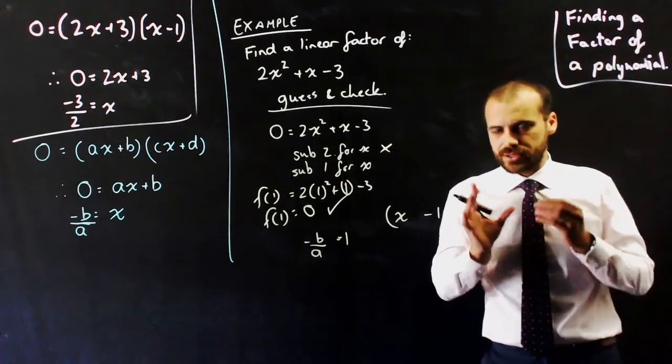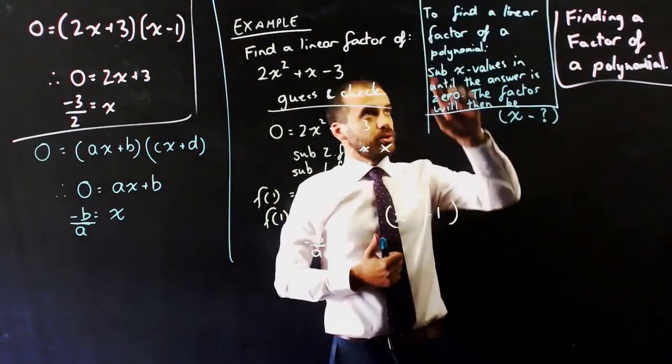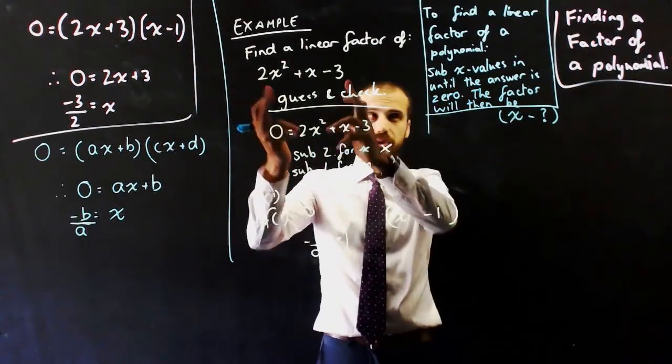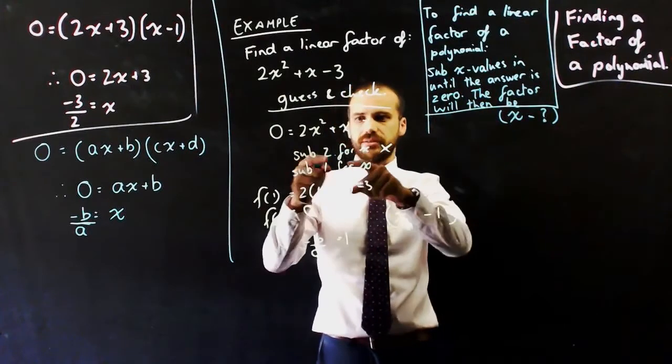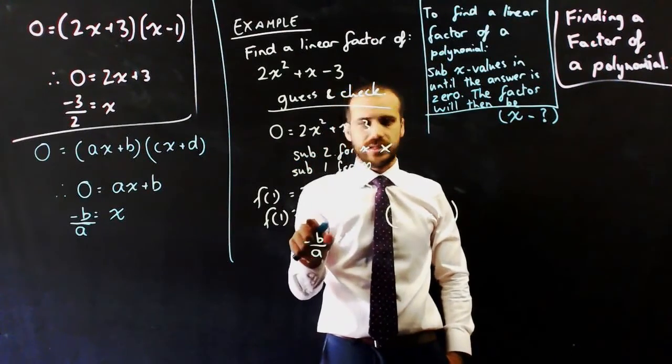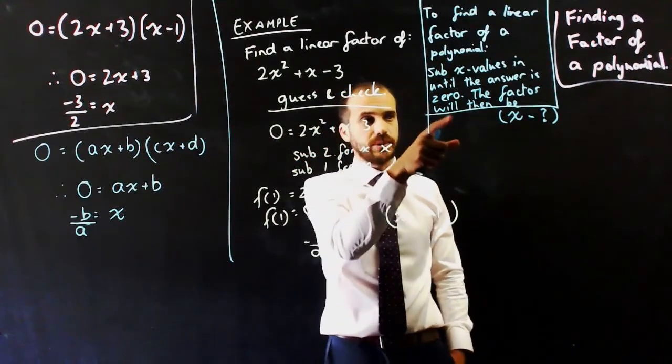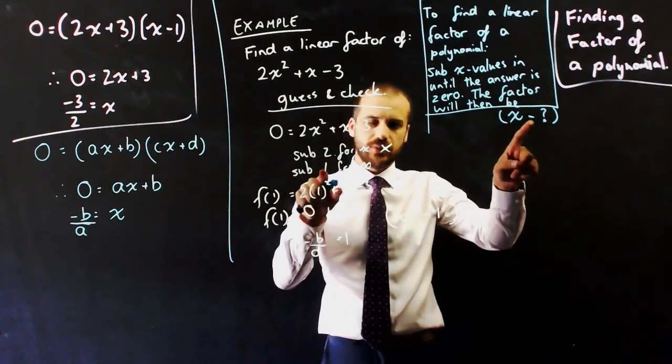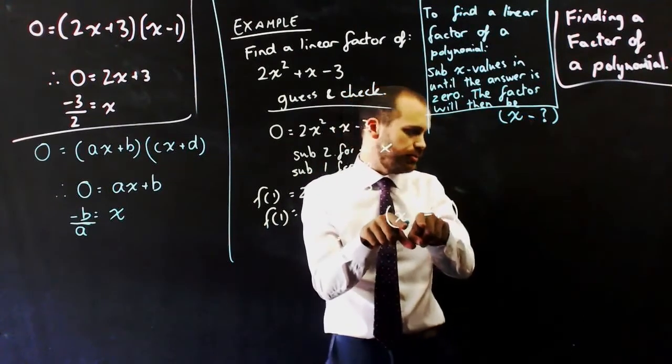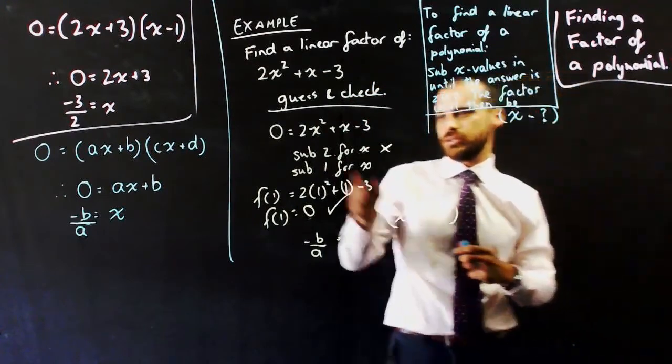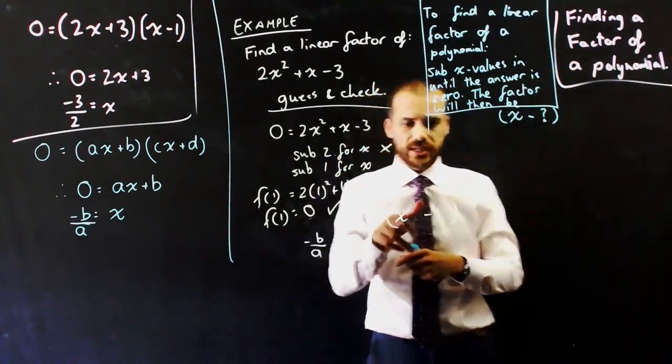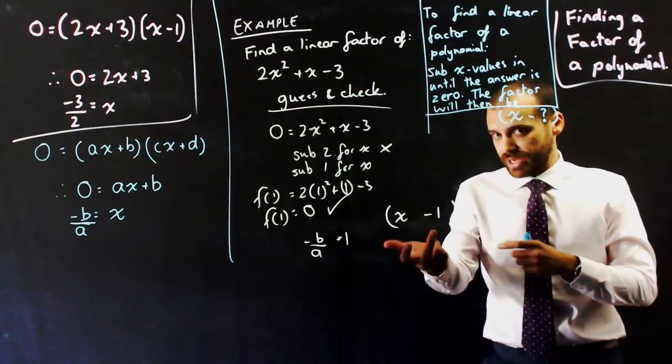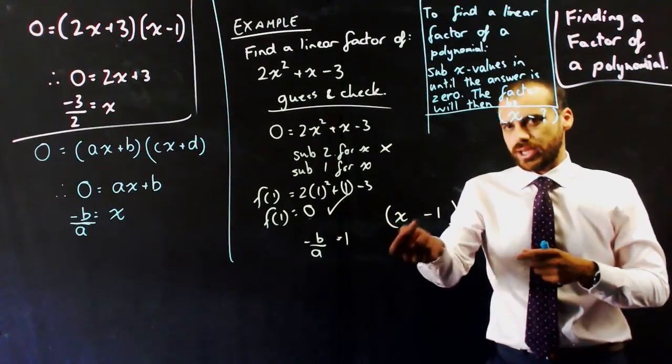All right, so what does that mean in plain terms? I'm going to make this really simple. To find a linear factor, that's our linear factor, of a polynomial, that's a polynomial, sub some x values in, I subbed in 2, I subbed in 1, until the answer you get is 0. The factor will then be x minus the thing you subbed in. So if you subbed in 1, then the factor is going to be x minus 1. If you subbed in 2, and you've got an answer of 0, then the factor is going to be x minus 2. If you subbed in negative 3, then the factor is going to be x minus minus 3, which is x plus 3.